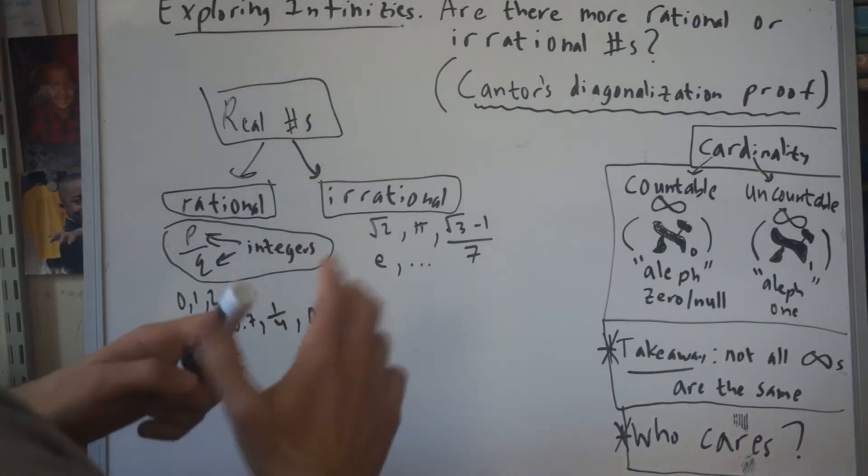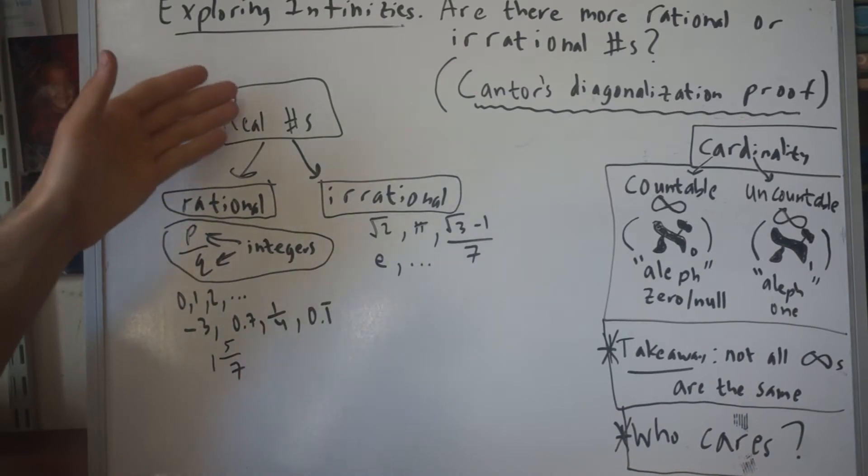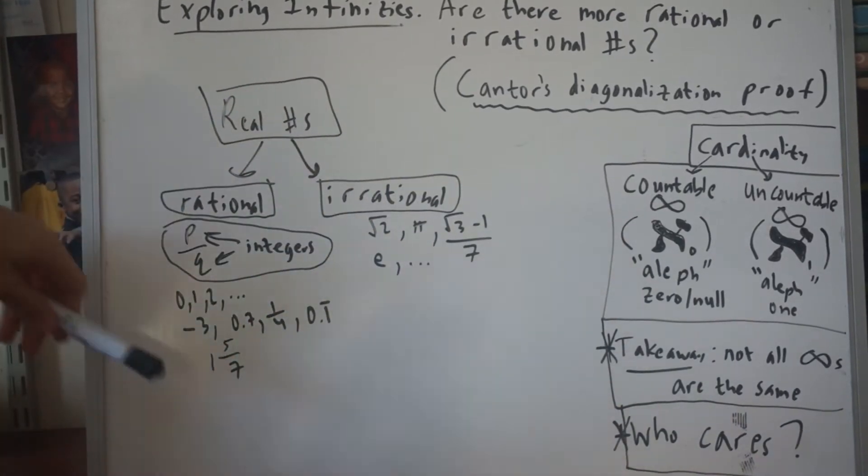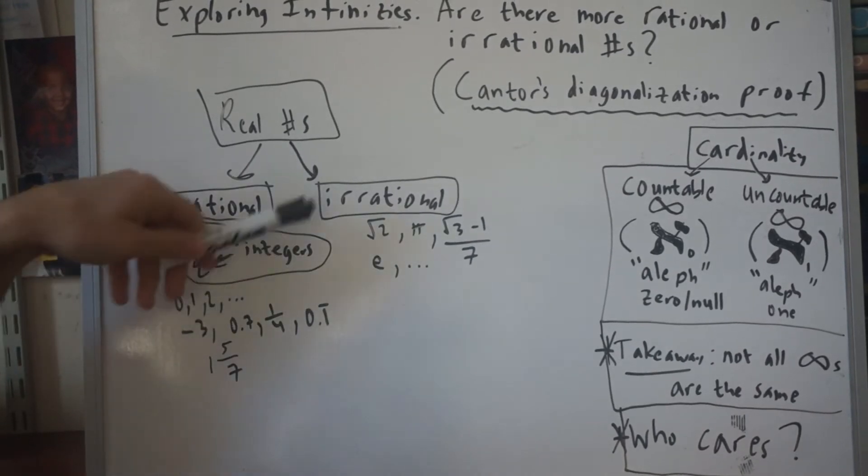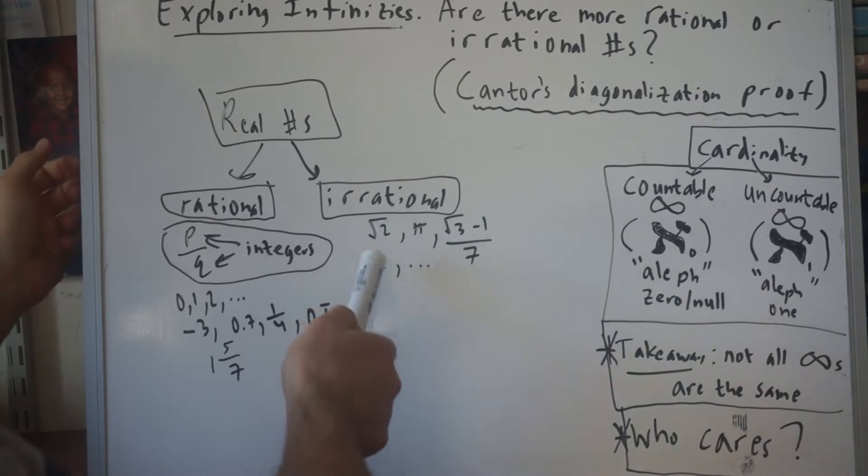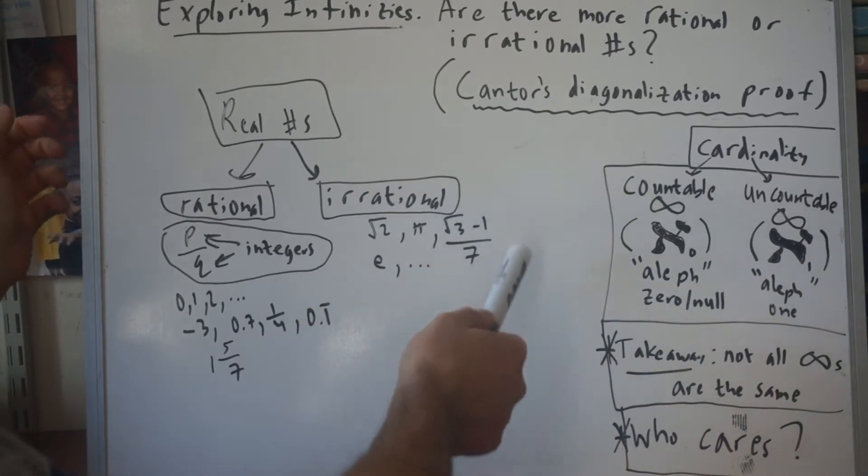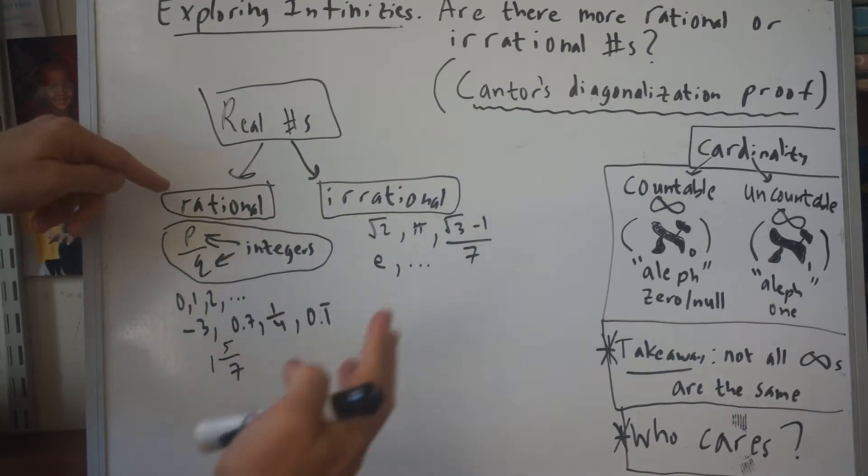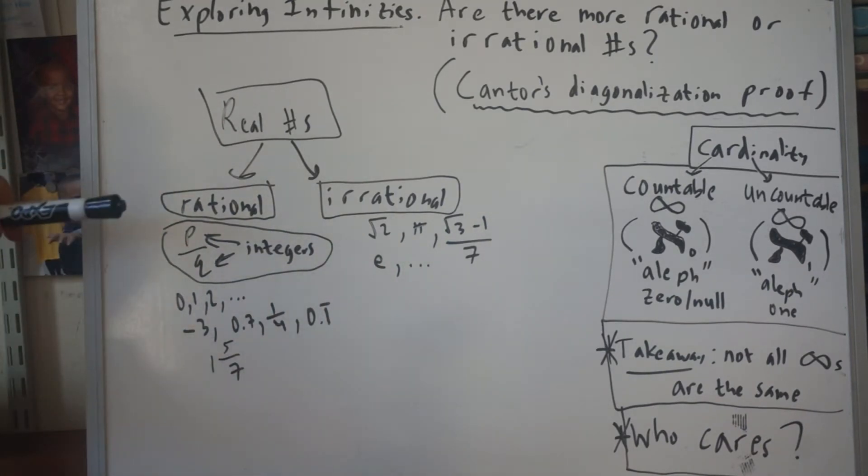Okay, so we have real numbers, and real numbers are split into rational numbers and irrational numbers. Here I have some examples of typical rational and irrational numbers. Rational would be integers like 0, 1, 2, negative 3, and fractions. Irrational would be square root of 2, pi, e, square root of 3. The technical definition of rational numbers is they can be written as P over Q where P and Q are integers.